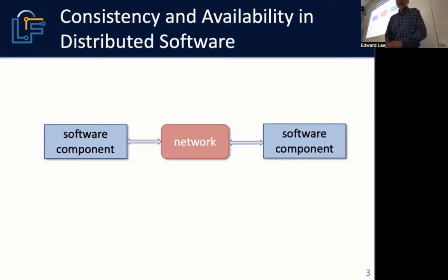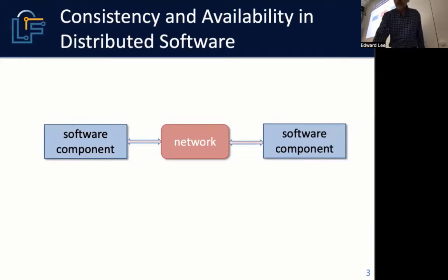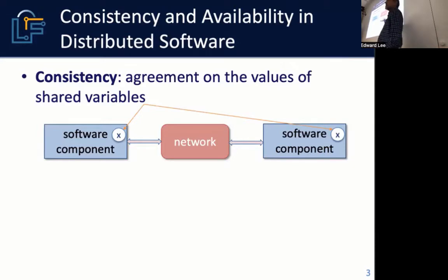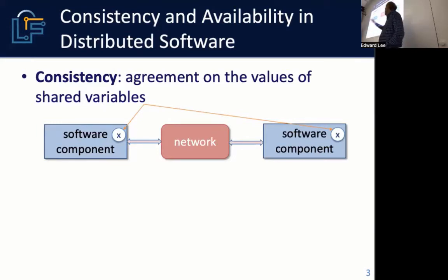What do we mean by consistency and availability? If you have two software components communicating over a network, consistency is simply agreement on the values of shared variables. In the database context, if you have a distributed database, in order to remain responsive — to preserve availability when the network breaks — you have to replicate data.